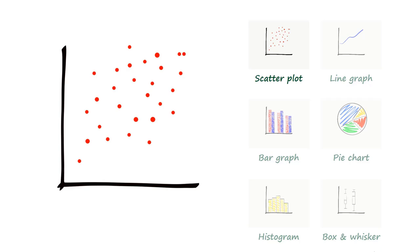Scatter plots can be used to identify relationships between two quantitative variables. Quantitative variables are numeric and represent a measurable quantity. For example, population, height or weight.